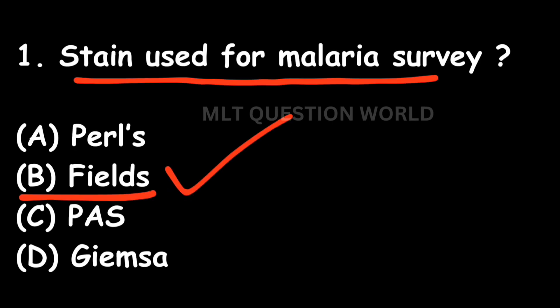The right answer is Option B: Field stain. Field stain is used for malaria survey as it is a quick staining method and can be used for mass detection programs for malarial parasites. This is an important question repeatedly asked by PSC in various question papers.